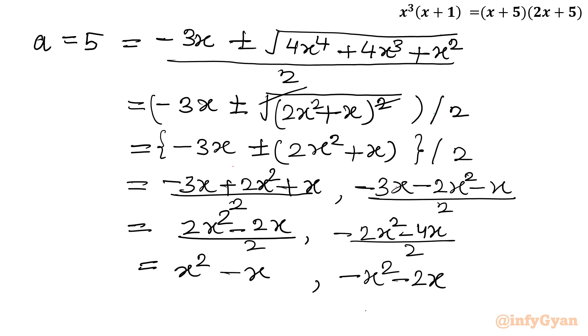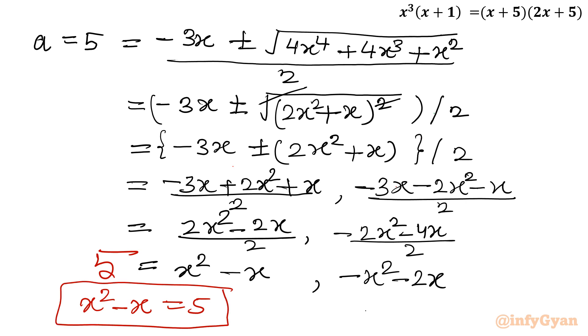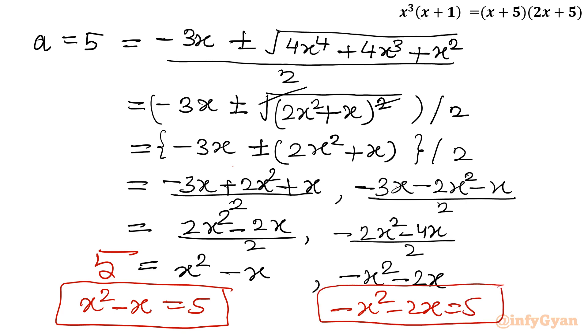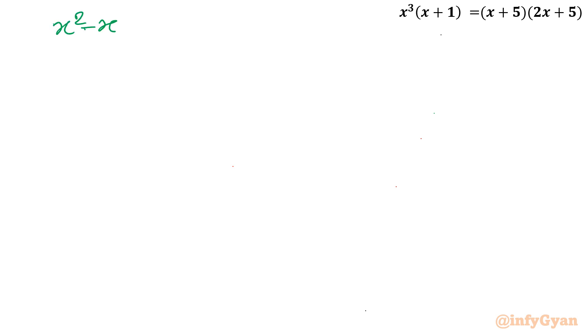Since a equals 5, substituting back gives two quadratic equations. The first equation is x² − x = 5, or x² − x − 5 = 0. The second equation is −x² − 2x = 5, which rearranges to x² + 2x + 5 = 0. We now solve both of these quadratics.